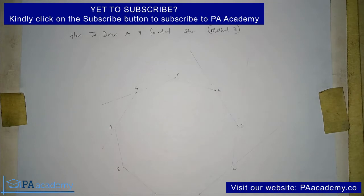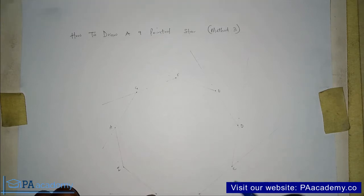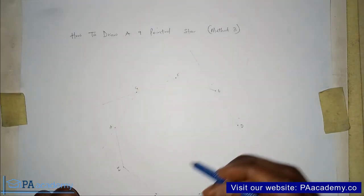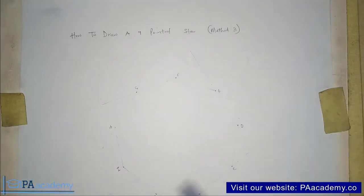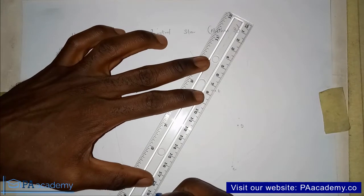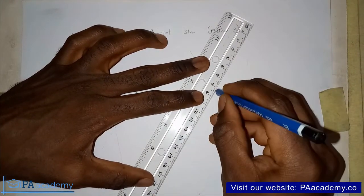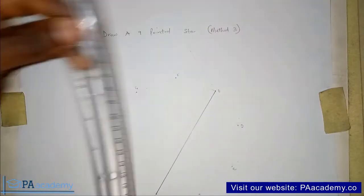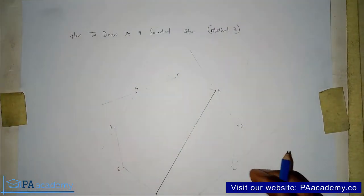Now for this method three, unlike method one and method two, this time around starting from point A, you're going to be drawing a line from point A, skipping the next three vertices and drawing a line straight to the fourth one. From point A, we are going to skip vertex B, vertex C, and vertex D. We are going to draw a line from vertex A straight to vertex E. So from A straight to vertex E with a bold line.